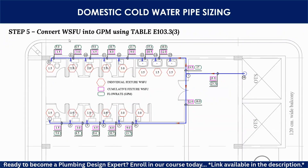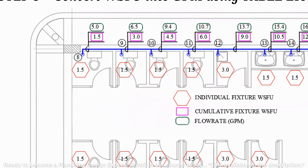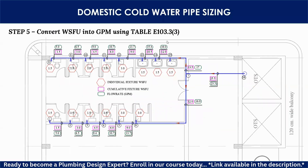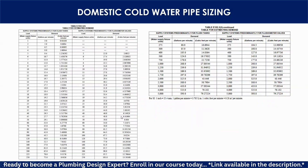Step 5: convert WSFU into GPM (gallons per minute) using table E103.3 of the IPC. In the previous step we wrote the cumulative WSFUs such as 3 and 4.5. In this step we write the corresponding flow rate in GPM. These values come from the table — for example, for 9 WSFU the assigned flow rate is 13.7 GPM.